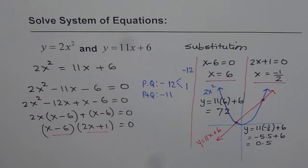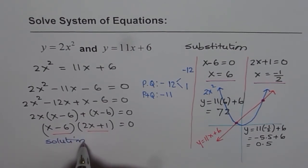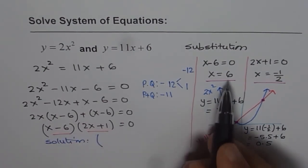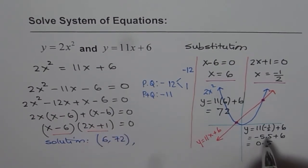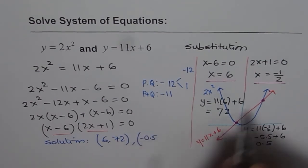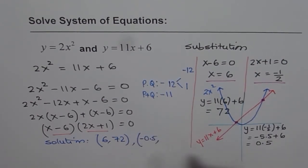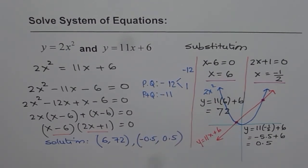And now we will write down the solution. So the solution is first coordinate point is 6 and 72. And the second one is x equals to minus 0.5 and y value of 0.5. So these are the solutions for the given question. I hope you appreciate it. Thank you and all the best.